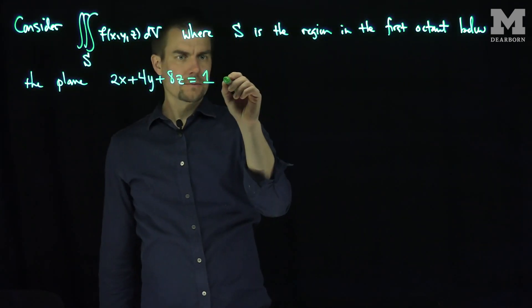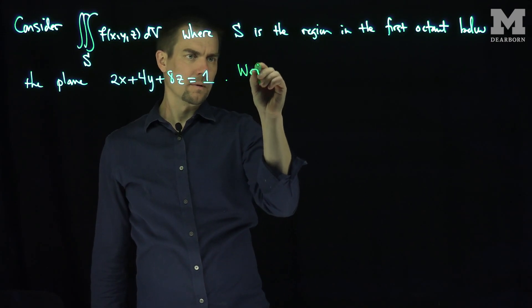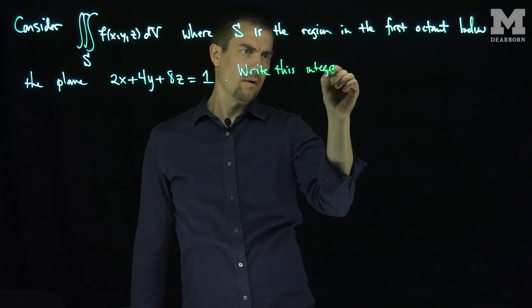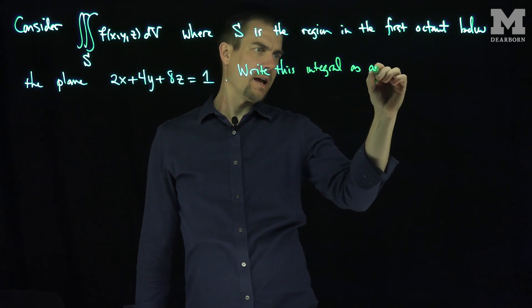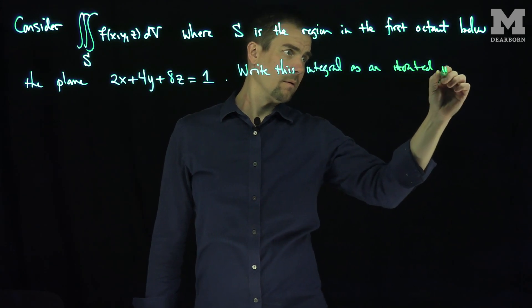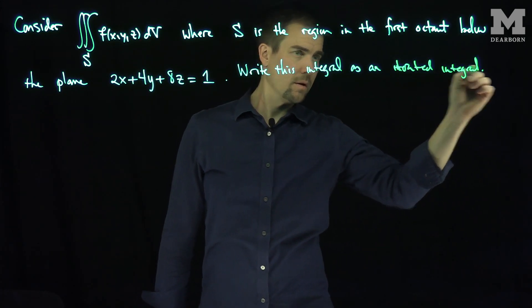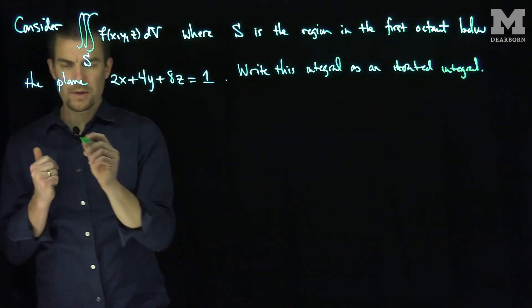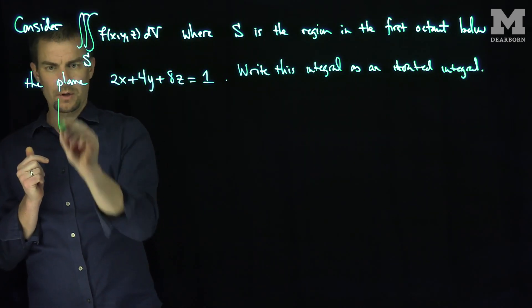Let's find, write this integral as an iterated integral. So we're going to do this at least two ways. There are six ways to do this actually. But let's plot this region and see what it looks like.